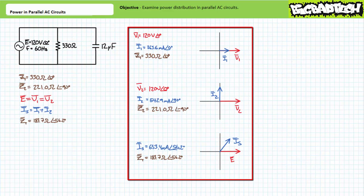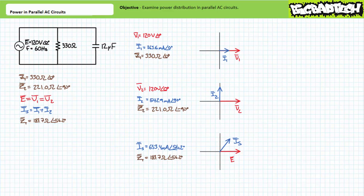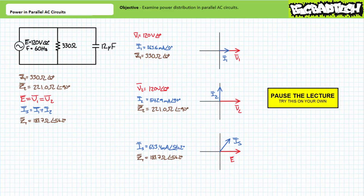Given these voltage and current figures, see if you can calculate the apparent, real, and reactive power for each individual element and the total parallel circuit. Recall, power calculations necessitate the use of relative phase shift between voltage and current. Luckily, voltage across elements in parallel is the same, and we're employing source voltage as our reference. This means we really don't have to worry about the conversion between absolute and relative phase shift as we do with series circuits. By all means, pause the lecture and try this on your own.